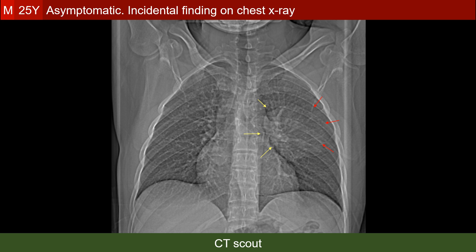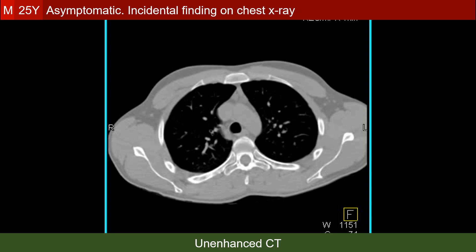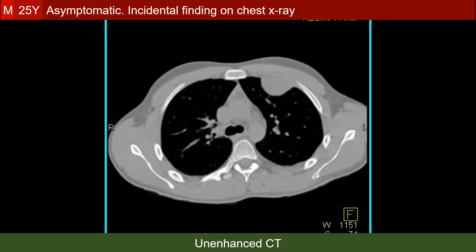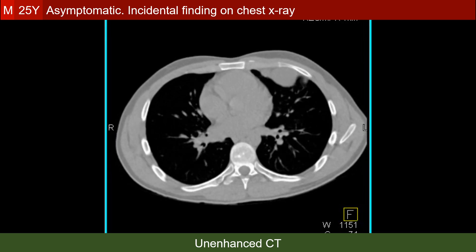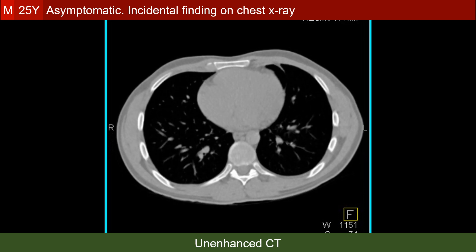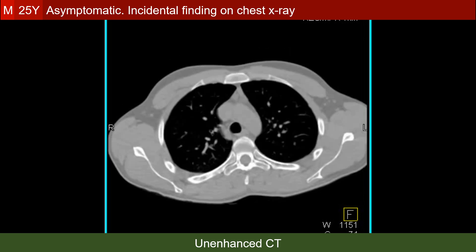Here is the scout of the CT showing the same findings as the chest x-ray. These are the CT sections showing the same findings and adding important information about the inner architecture of the lesion, which is quite homogeneous, and ensuring the absence of other lesions.